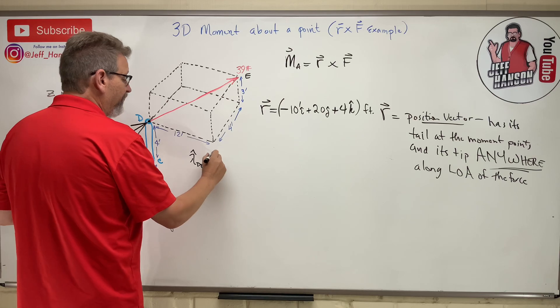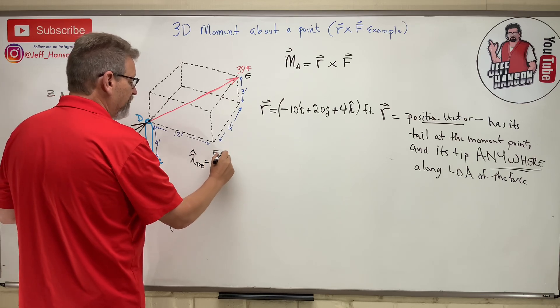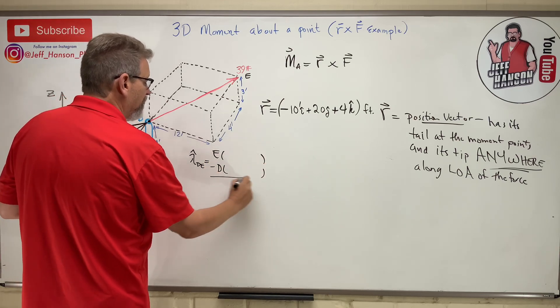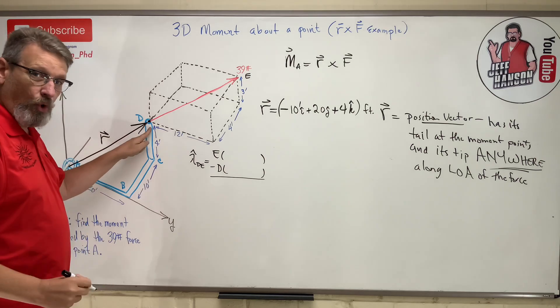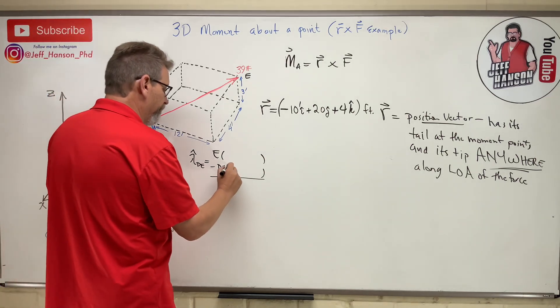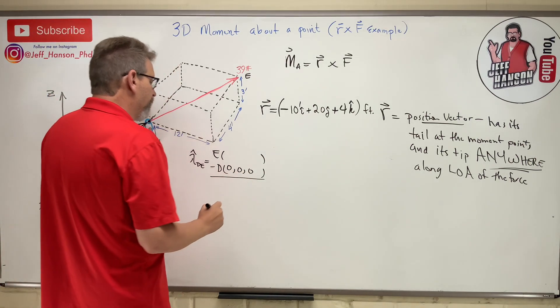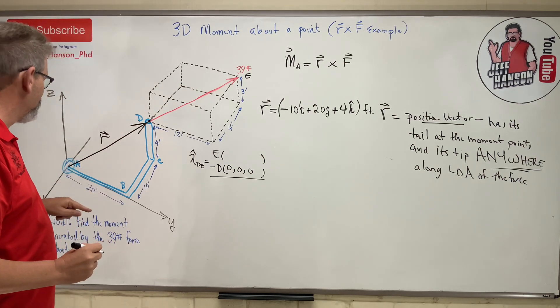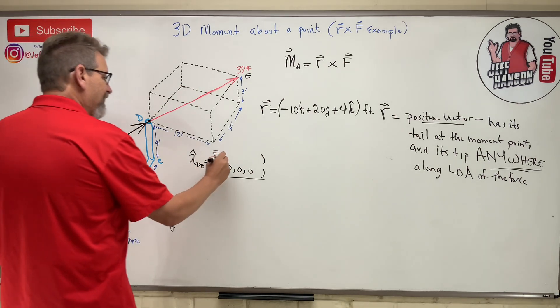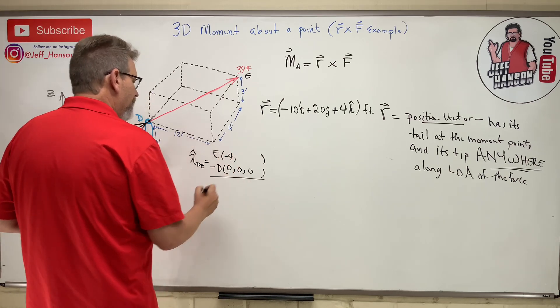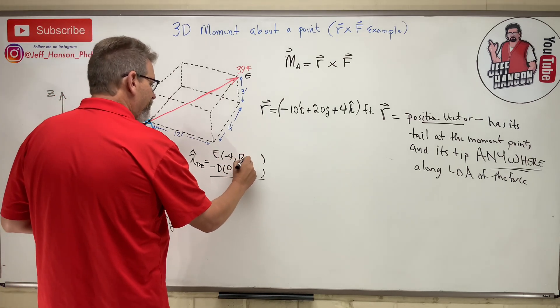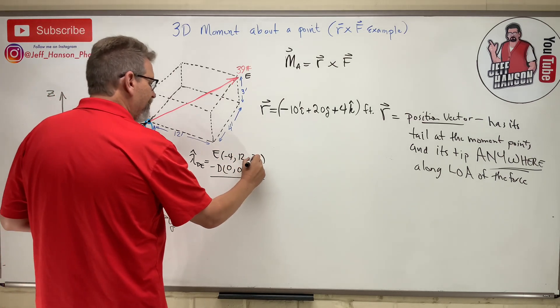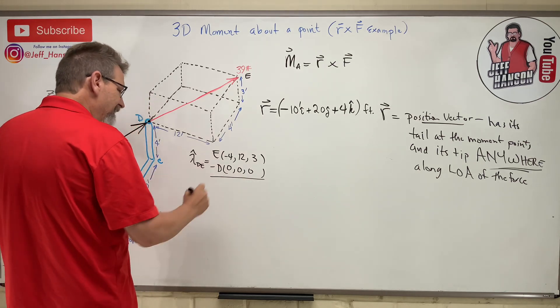How do you do that? It's E minus D. Point D we made that our new origin, so that's all zeros. E is going to be pretty much it. How do I get to there from here? I gotta go negative 4 in the x, I gotta go 12 in the y, and I gotta go 3 in the z. That gives me negative 4 i-hat plus 12 j-hat plus 3 k-hat.